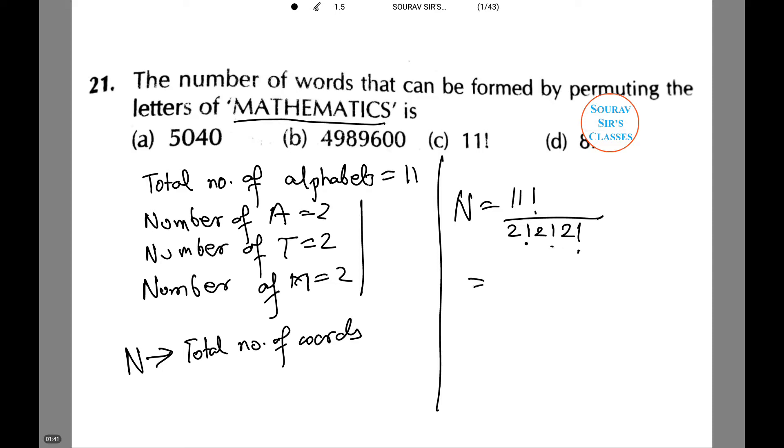This upon calculation comes to 11 times 10 times 9 times 8 times 7 times 6 times 5 times 4 times 3 times 2 times 1 whole divided by 2 times 2 times 2 times 2.